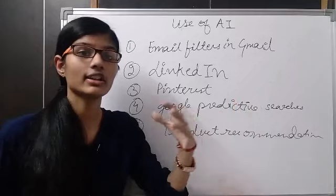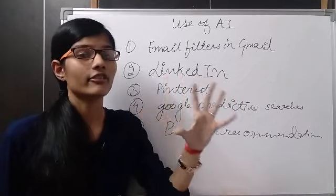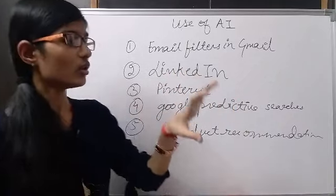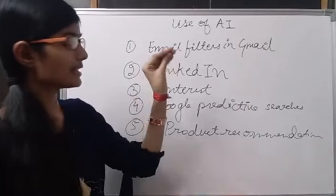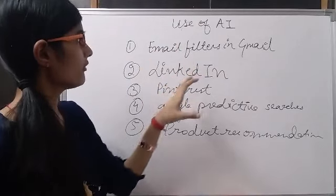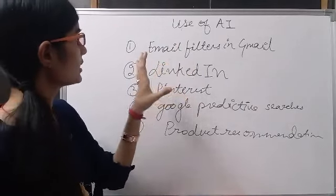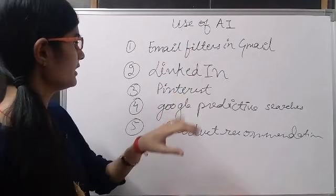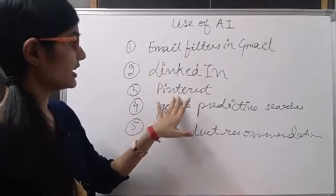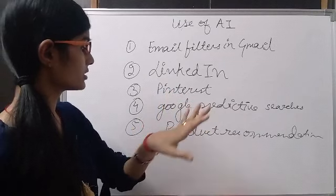So let's take a revision and a summary. Use of AI: first is email filters in Gmail, second LinkedIn, third Pinterest, fourth Google predictive searches, and fifth one is product recommendations.